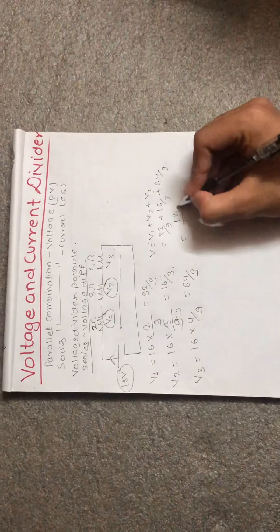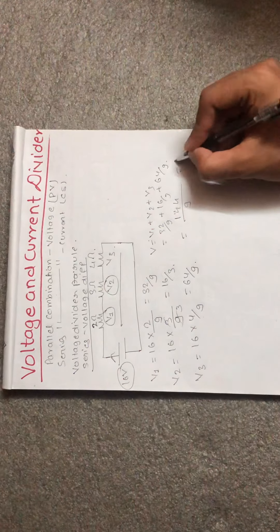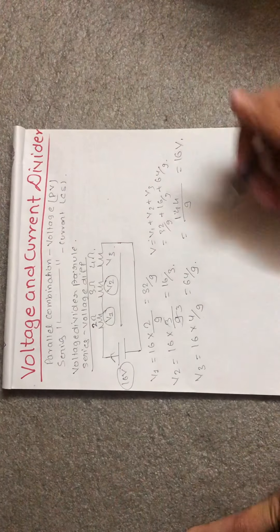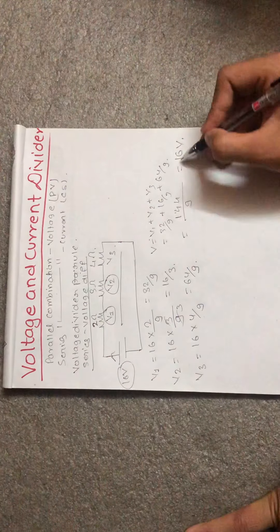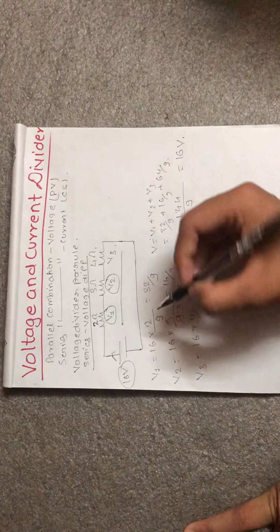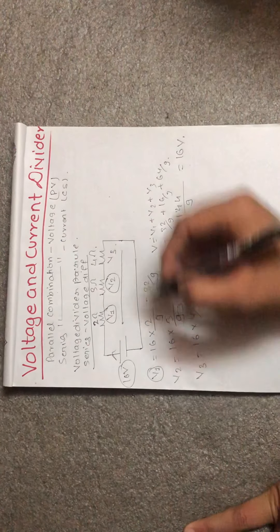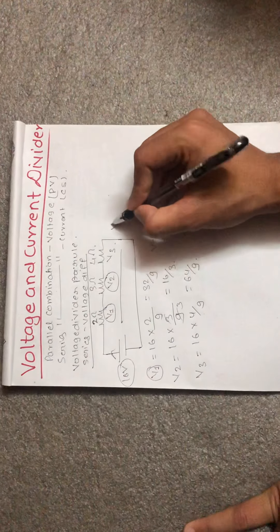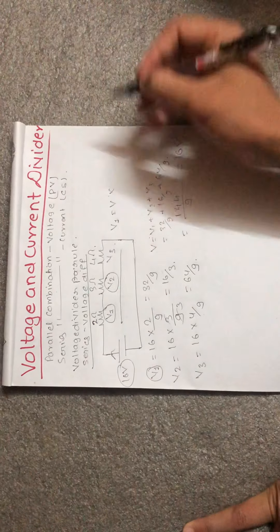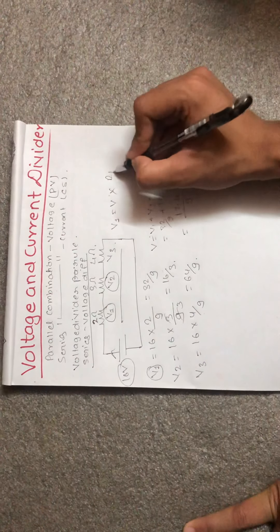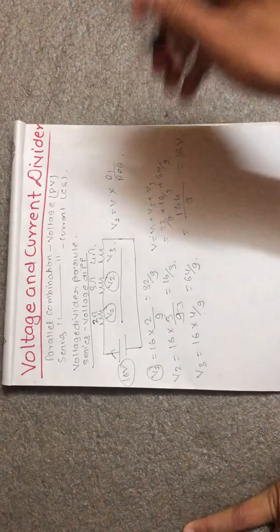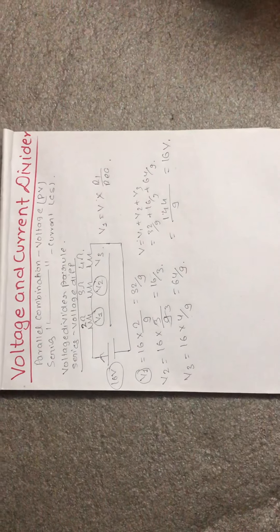So from this example, the voltage divider rule formula is: individual voltage equals total voltage multiplied by individual resistance divided by total resistance. That is how the voltage divider rule works in a series circuit.